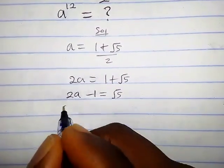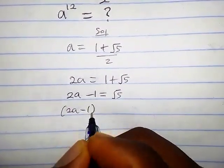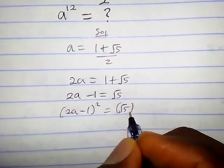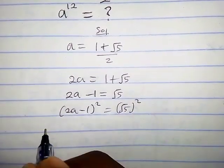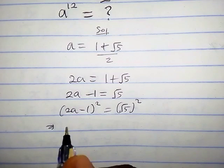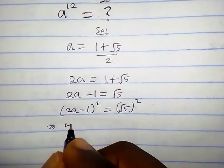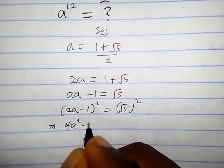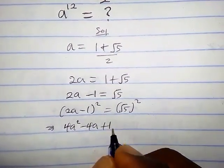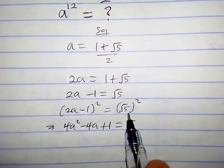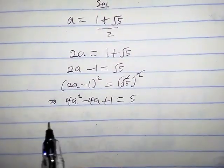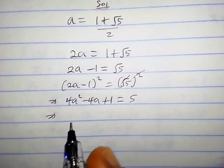Squaring both sides gives us two a minus one, squared, equals square root of five, squared. When we expand the left side we obtain four a squared minus four a plus one equals five, because the square root cancels on the right.